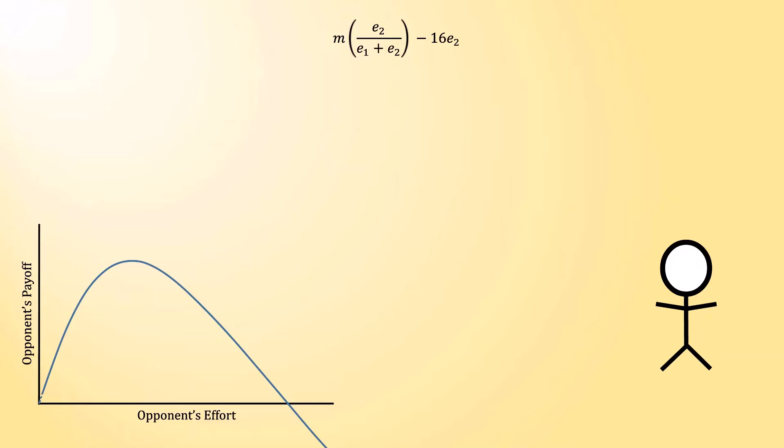As they increase their effort a little bit, they'll start making more and more money in expectation. But at some point, that's going to level off. And if they exert tons and tons of effort, eventually their payoff will become negative.